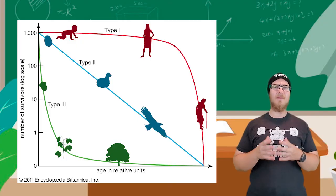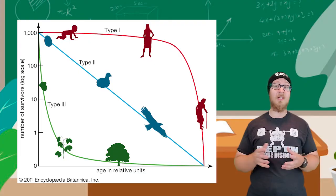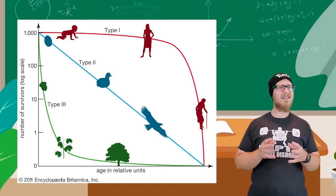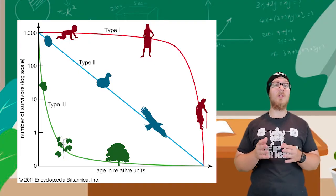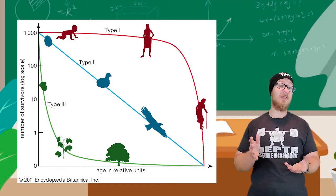Skipping to a Type 3 survivorship curve, very few organisms survive their early stages of life, but they tend to survive a long time once they manage to maturity. This is very typical of plants, for example.